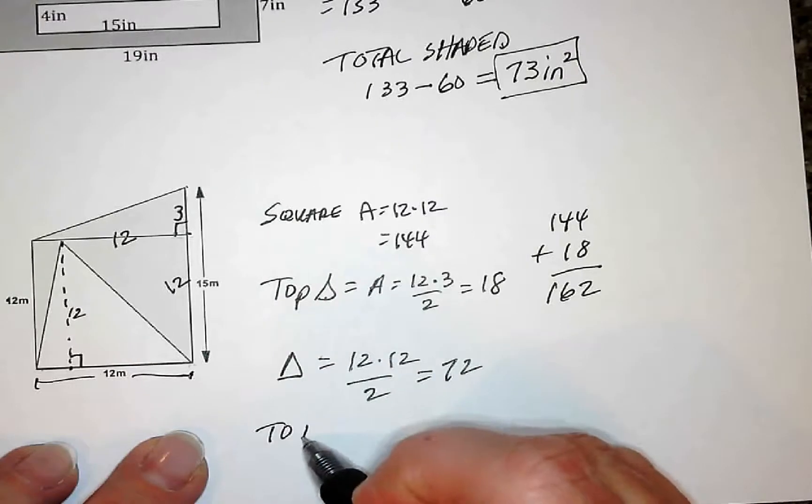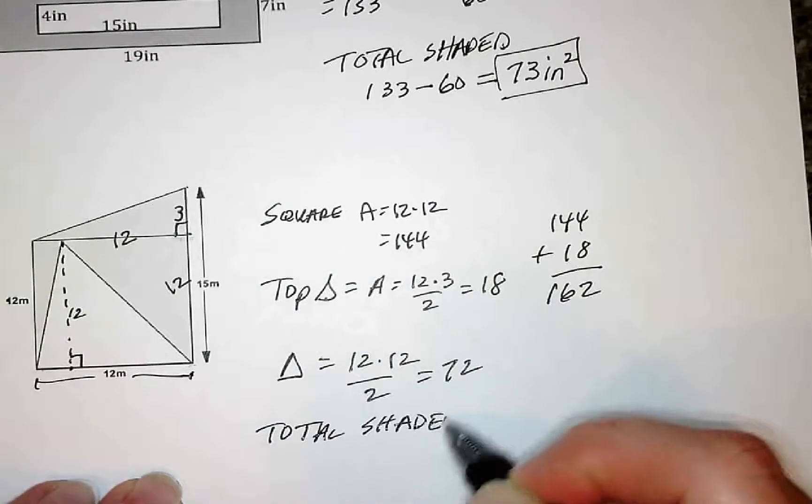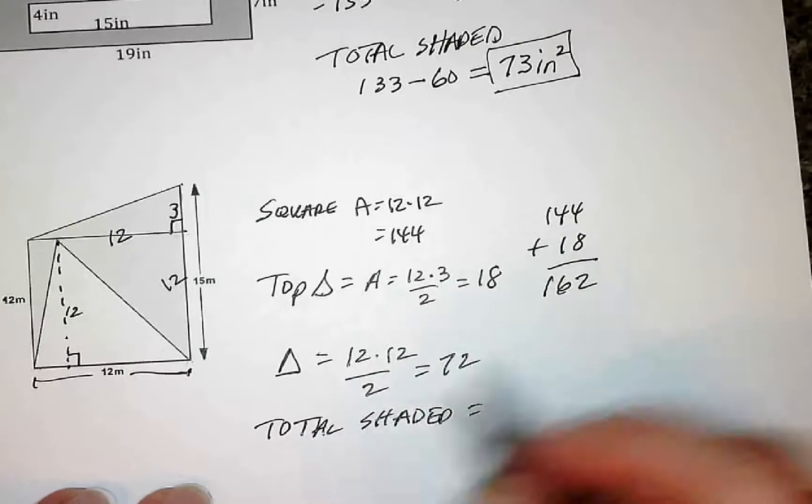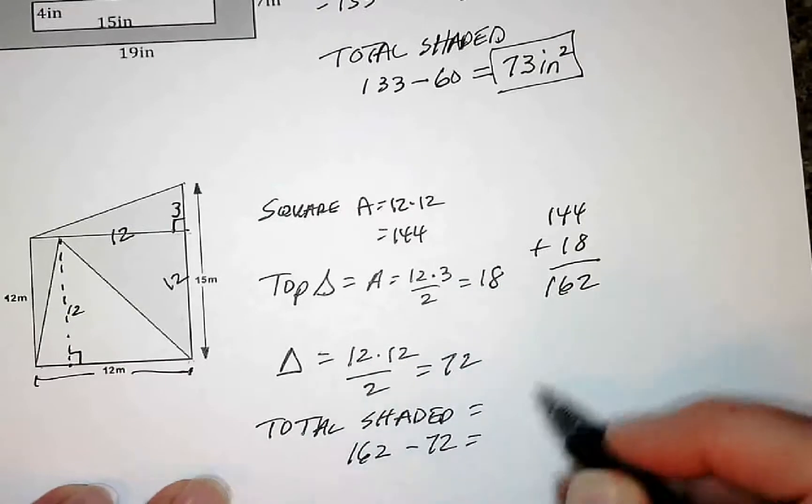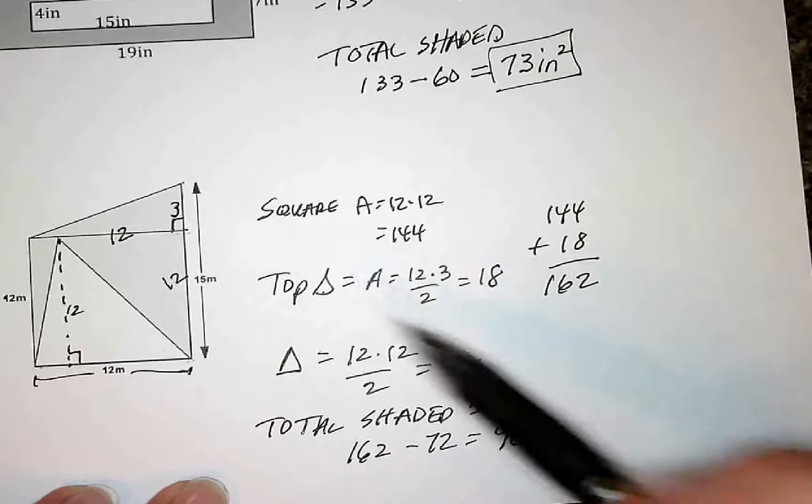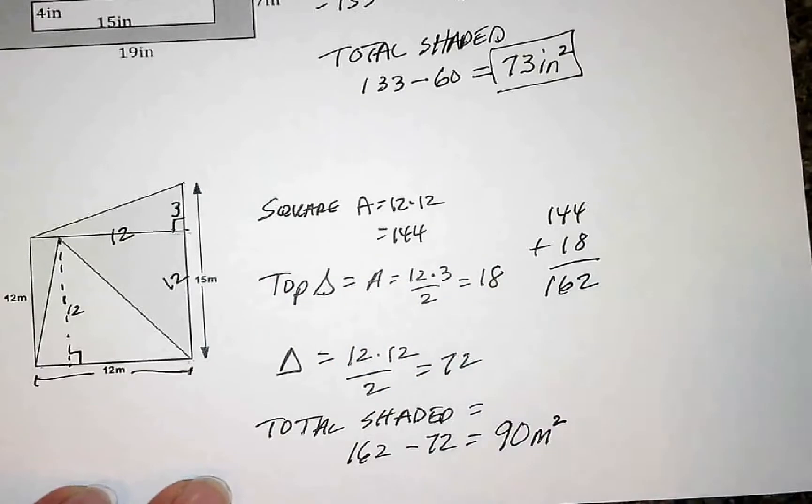So the total for the shaded is going to be 162 minus the white triangle, 72. That leaves me 90. This one has a unit of meters, and so my label on that would be square meters.